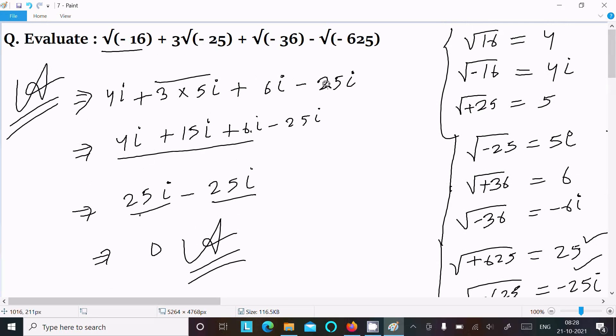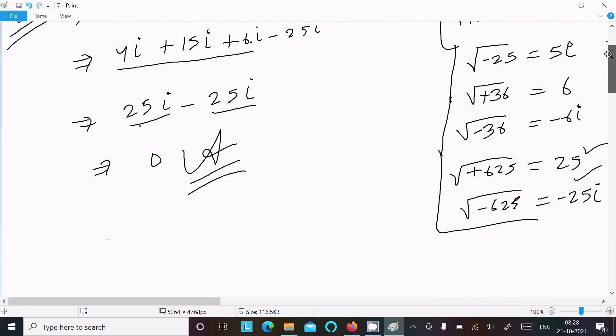So put the values: 25i, 6i, 5i, and 4i. After doing the calculation, you get 0. This is the way we can evaluate this question.